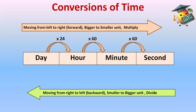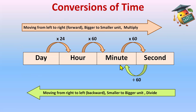Moving from right to left — that is backward, from a smaller unit to a bigger unit — you always divide. So: Second to Minute, divide by 60; Minute to Hour, divide by 60; Hour to Day, divide by 24. To summarize: moving forward (left to right) you multiply; moving backward (right to left) you always divide.